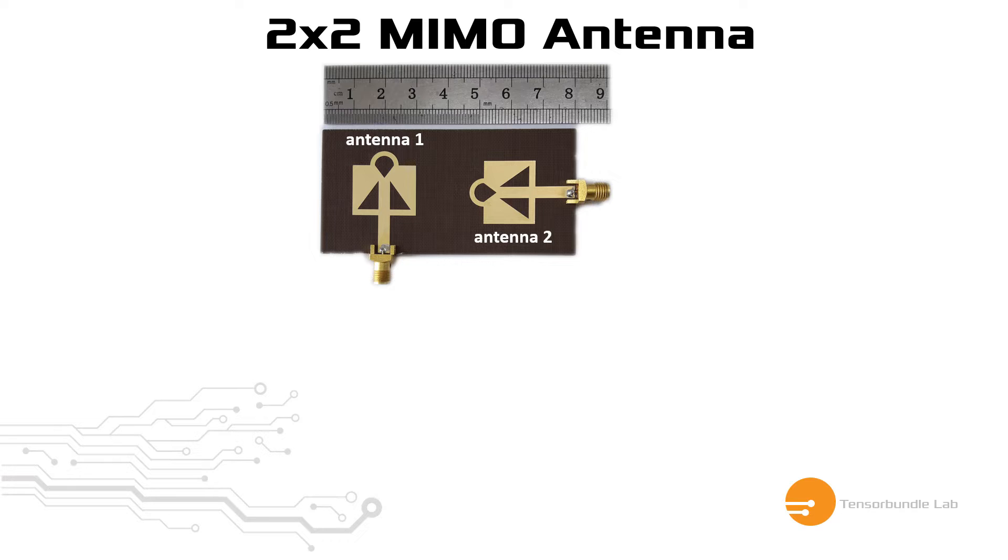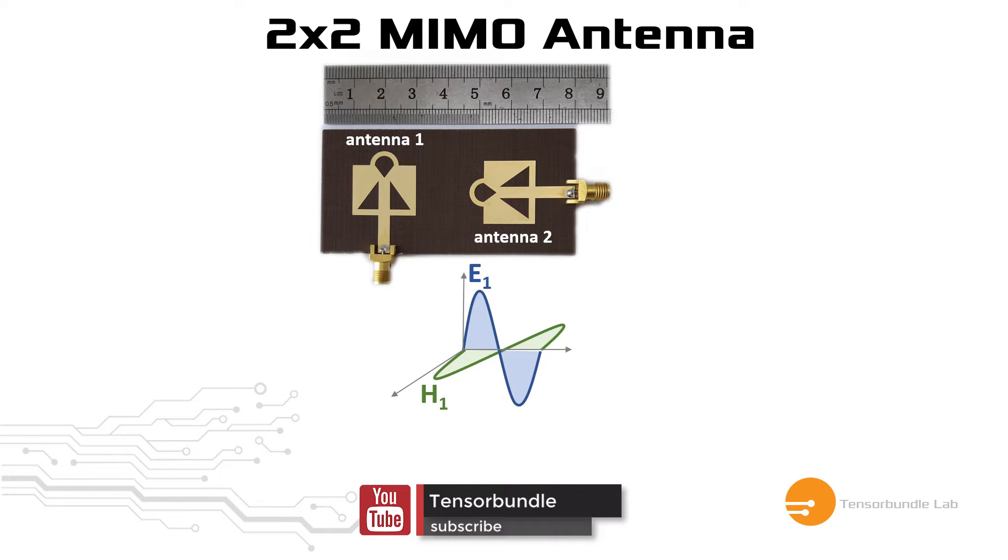For example, say E1 is the electric field emitted by antenna 1 and H1 is the corresponding magnetic field associated with this E1, which together give rise to the radiated electromagnetic field.